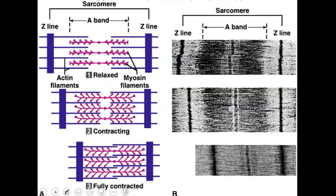On the left-hand side you can see what's happening at the molecular level; the right-hand side shows what it looks like under the microscope. The relaxed position is on top. The second picture shows contraction occurring. The third picture shows fully contracted — the myosin heads have pulled the filaments completely together.